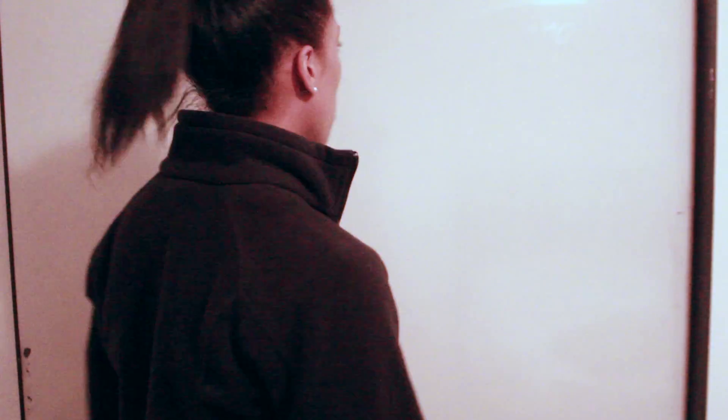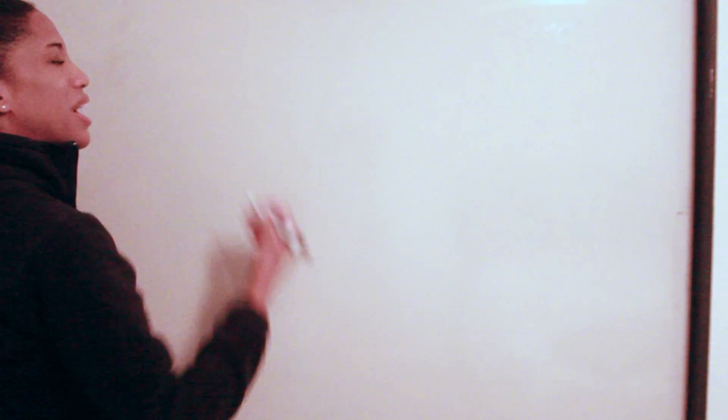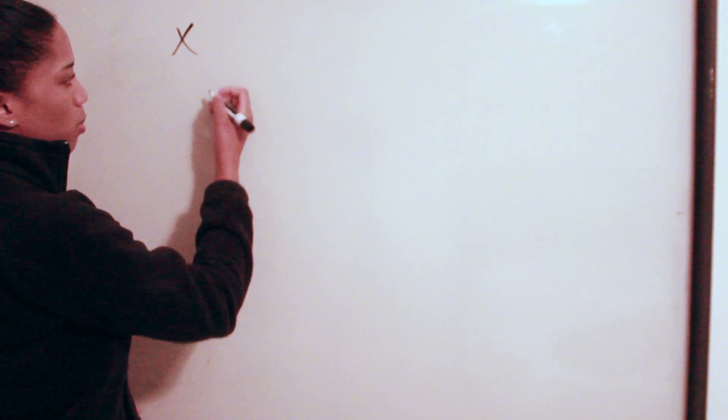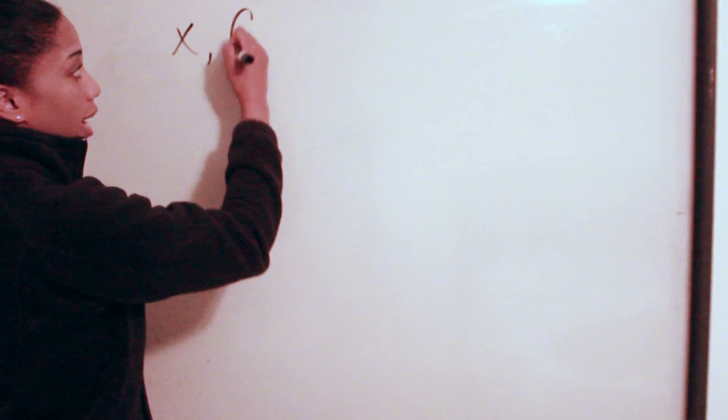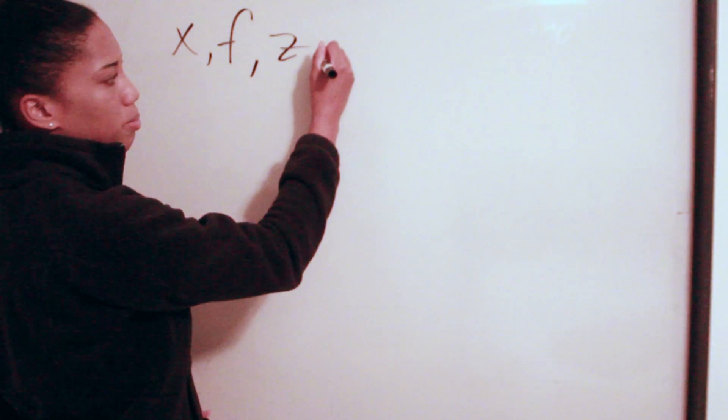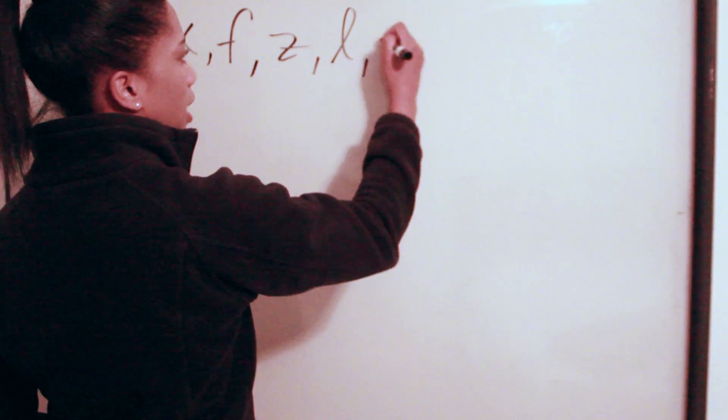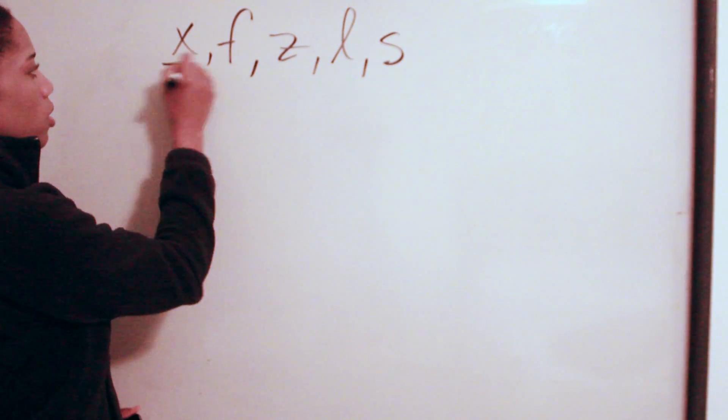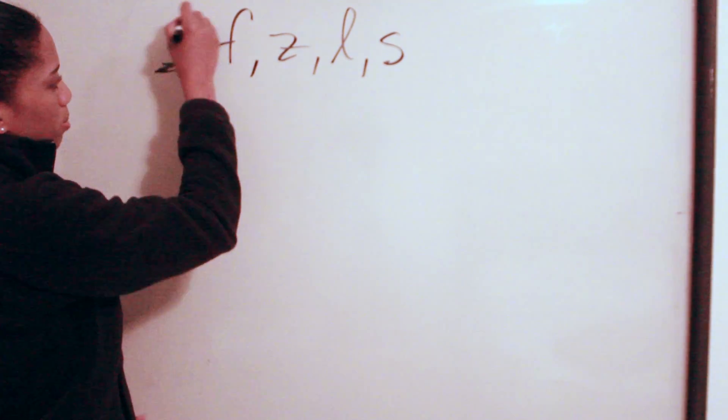So first let me discuss what a variable is. A variable is basically a letter. So X can represent the variable, F, it can be any letter that you want to pick: Z, L, S.